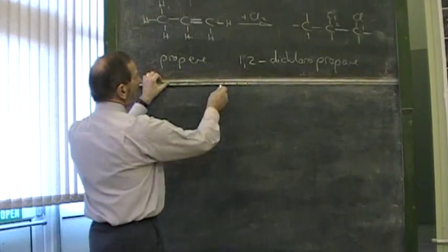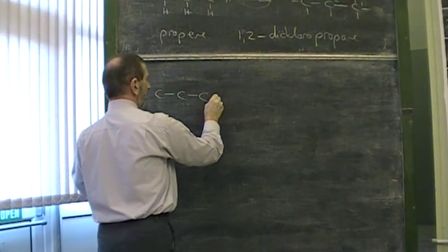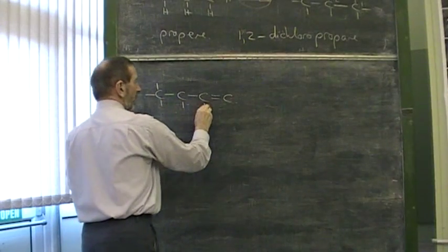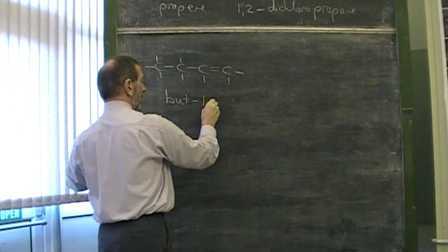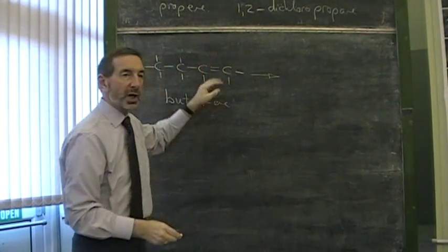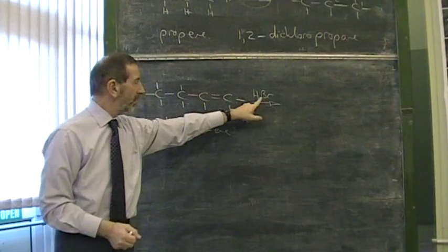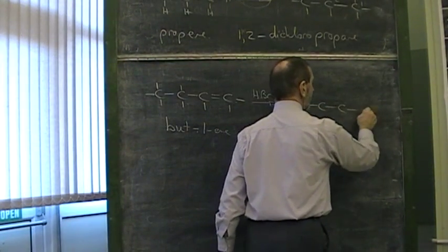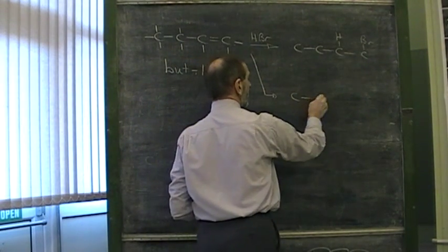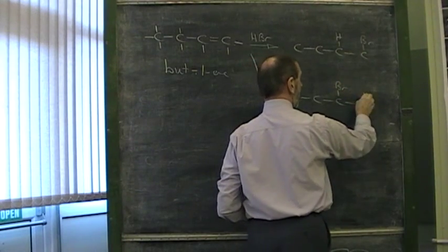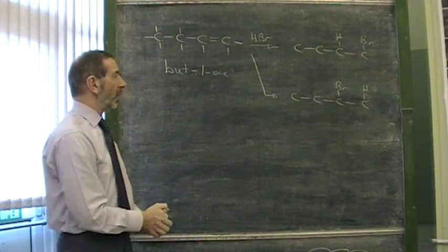A complication arises when the molecule we're adding on is just a little bit different from that. Let's take this example. Let's take but-1-ene. And this time, we'll add a molecule such as hydrogen bromide. Now, where's the complication? Well, the problem is, which way round does this add on? There are two possibilities. And this is where you need your wits about you. They could add on the other way round. Maybe the bromine goes there. Maybe the hydrogen goes there. You're not expected to know if either of these is preferred. The point is, there are two possible products, each with its own unique name.